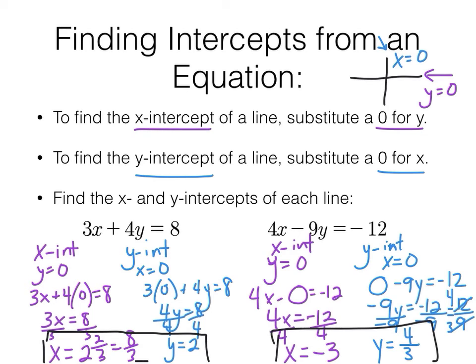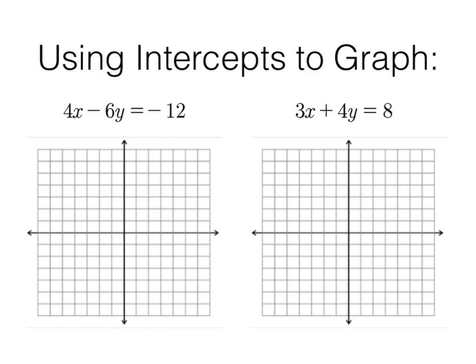What can we do with intercepts? We can graph using intercepts. We're going to graph each of these lines using the x and y-intercepts. Let's start with the first one: 4x minus 6y equals negative 12. I am going to plug in a zero for y. That term basically disappears. So 4x equals negative 12. Divide by 4, x equals negative 3. We're going to graph that on the x-axis, right there.